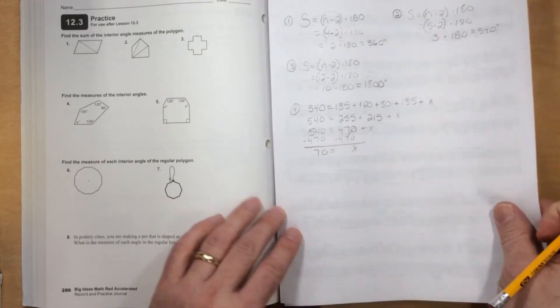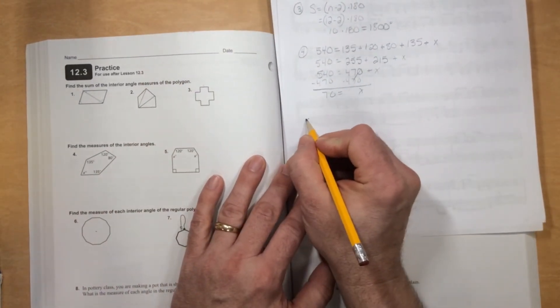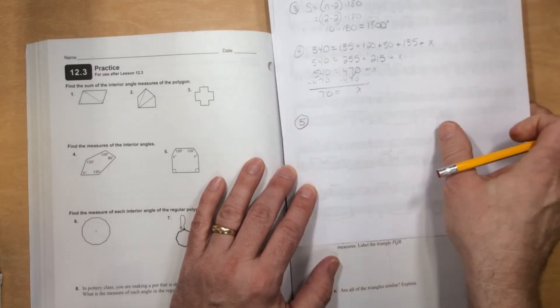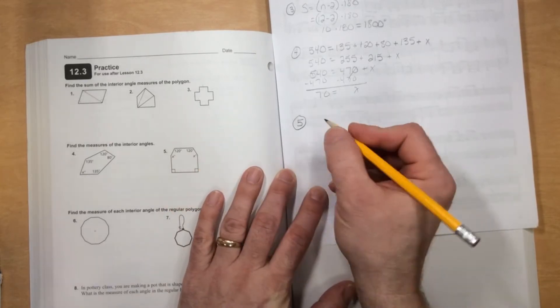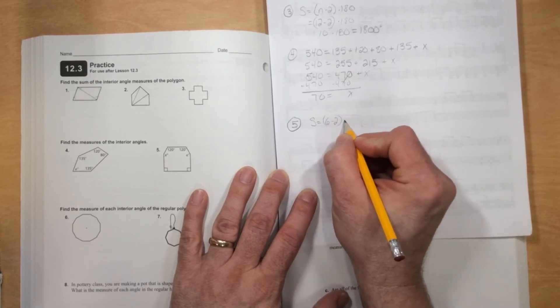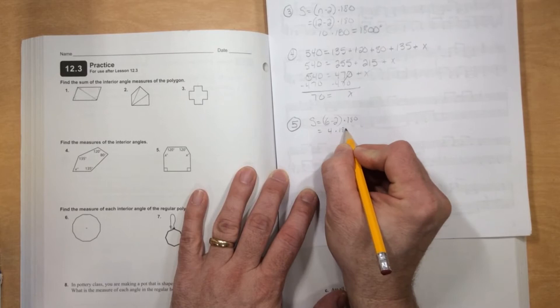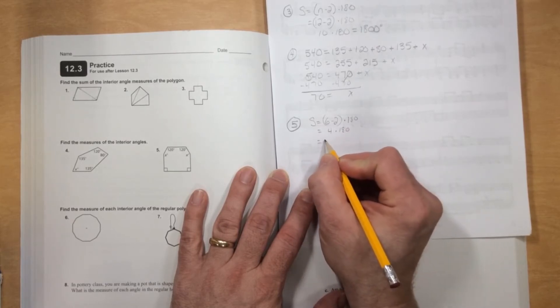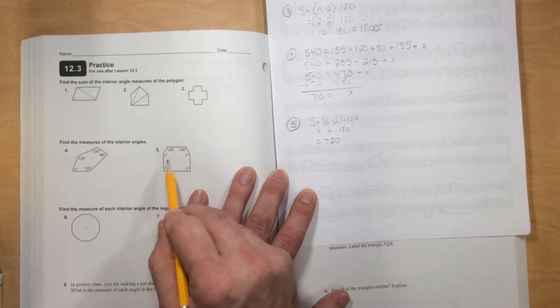Number 5. Same kind of thing. This is a 6-sided shape. I do not have the 6-sided shape up there, so now I have to find out. S equals 6 minus 2 times 180, which is 4 times 180, which equals 720. So now they have to add up to 720.